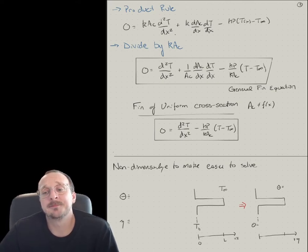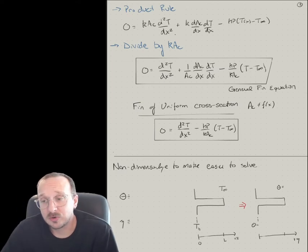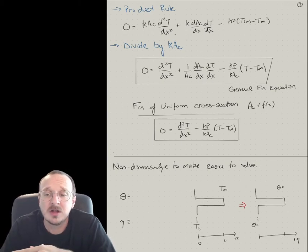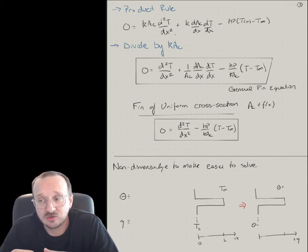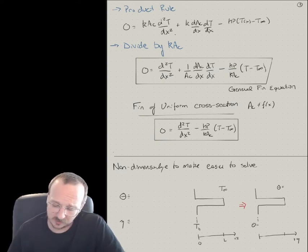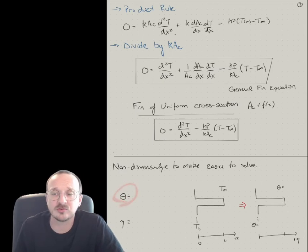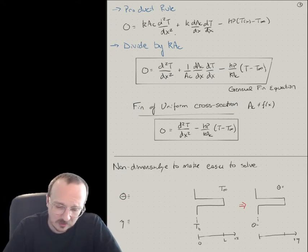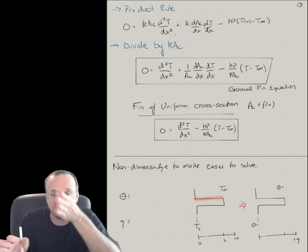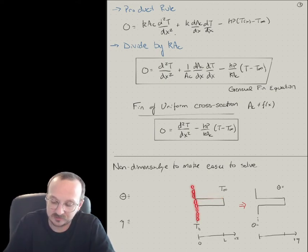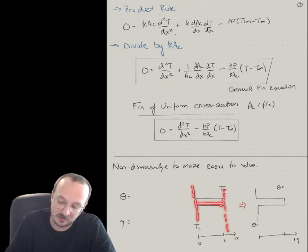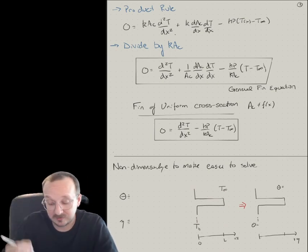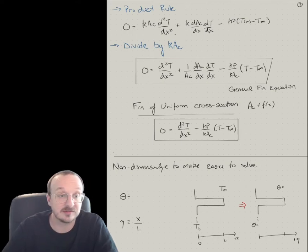Engineers prefer to solve these equations non-dimensionally because we can apply any scaling if we look at them dimensionlessly. So let's non-dimensionalize this equation. We need to define a dimensionless temperature and a dimensionless length scale. For the length scale z, we note the fin goes from x = 0 at the base to x = L at the tip, so z equals x over L is a natural normalization.